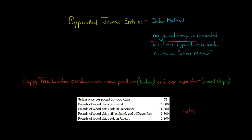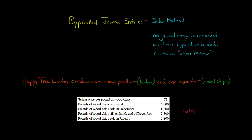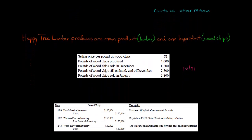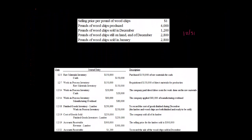We're not going to make any journal entry at all until the byproduct is actually sold. So we're not going to have a byproduct inventory account. But when we actually sell the byproducts — for example, in December when we sell the 1,200 pounds — we're going to recognize $1,200 of revenue, and not just any type of revenue. It's going to be other revenue, in the non-operating section. So let's walk through the journal entries and see how this would all play out.